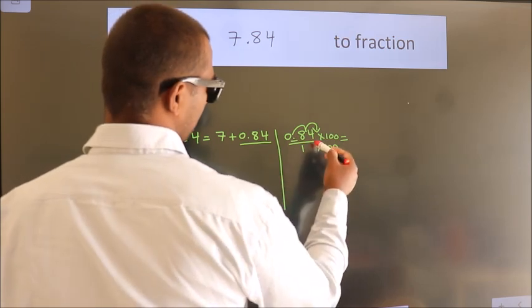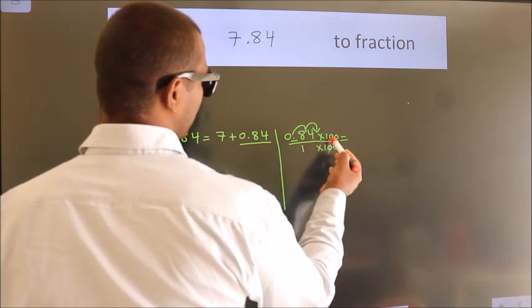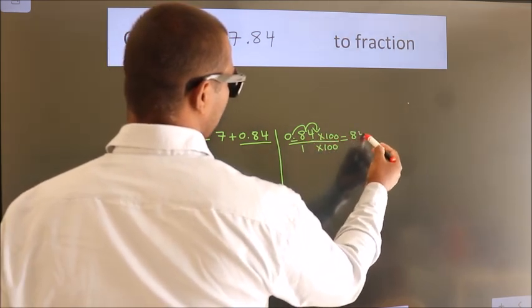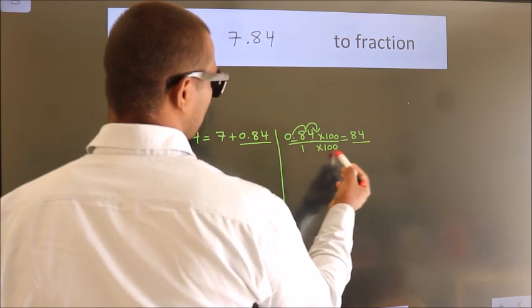Next, 0.84 into 100 is 84. 1 into 100 is 100.